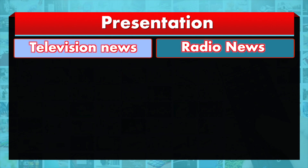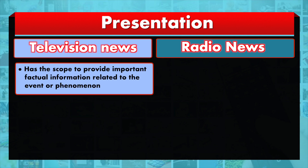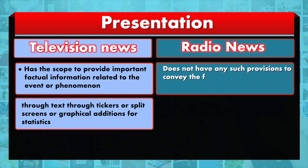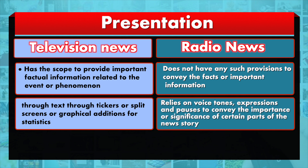Another difference is that television news has the scope to provide important factual information through text tickers, split screens, or graphical additions for statistics. Radio news does not have any such provisions for conveying facts. Radio news relies on voice tones, expressions and pauses to convey the importance or significance of certain parts of the news story.